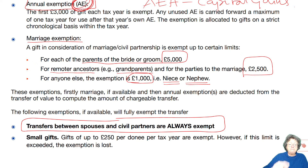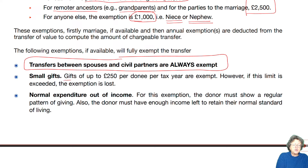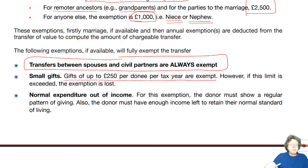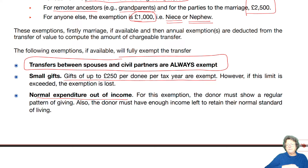You do the marriage exemption before the annual exemption. Just a few others: the small gift — gifts up to £250 per donee per tax year are exempt. If you give £300, you don't get £250 off it; the £300 becomes fully chargeable. It has to be up to £250. Then, normal expenditure out of income: a donor has to show a regular pattern of giving, and in that giving they still have enough in their normal lifestyle to be able to live accordingly. The most common one is grandparents giving school fees to individuals.